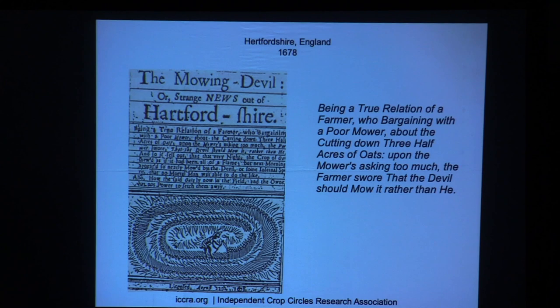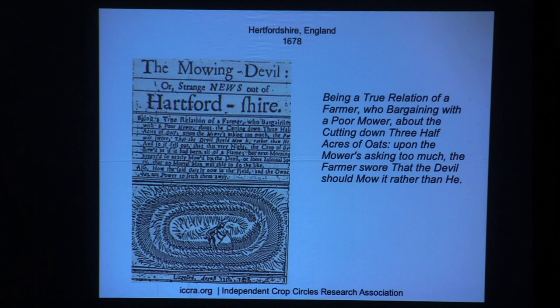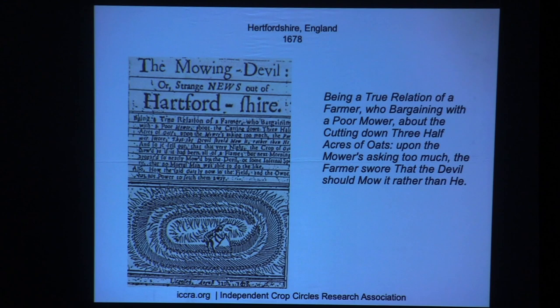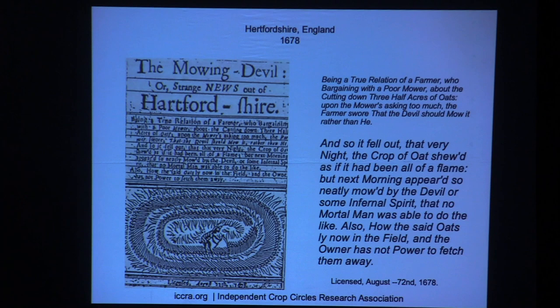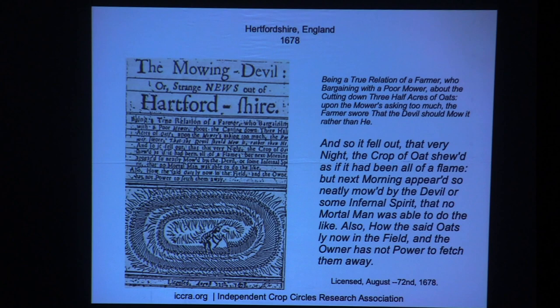From the 17th century in England, here is a woodcut. A mower was trying to bargain with a farmer about cutting his oats. The farmer swore that the devil should mow it rather than he. That very night the crop of oats showed as if it had been all of a flame — file away that mysteriously appearing light. Next morning it appeared so neatly mowed by the devil or some infernal spirit that no mortal man was able to do the like. Also, the owner had not power to fetch them away — some mysterious energy was blocking him from even entering that field.